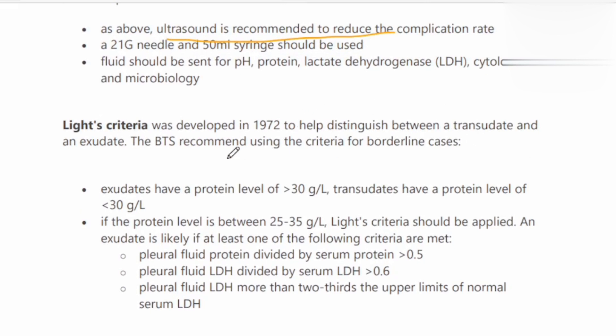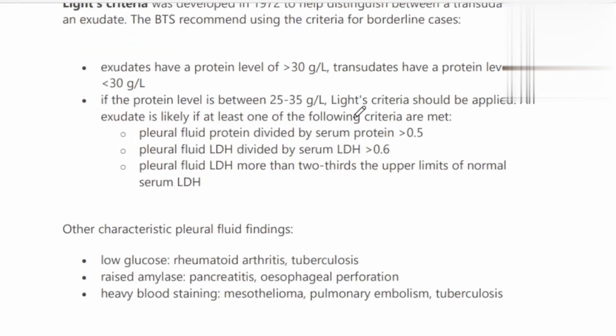Light's criteria is used when the protein level is between 25 to 35 grams per liter, to distinguish between transudate and exudate. If any one of the criteria is positive, the effusion is marked as an exudate. For a transudate, all of the criteria should be negative.